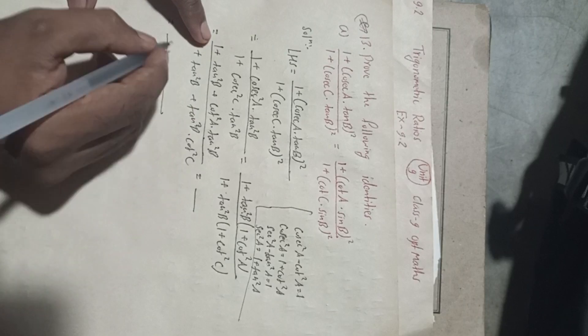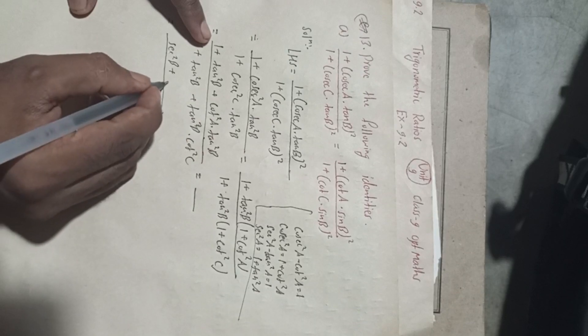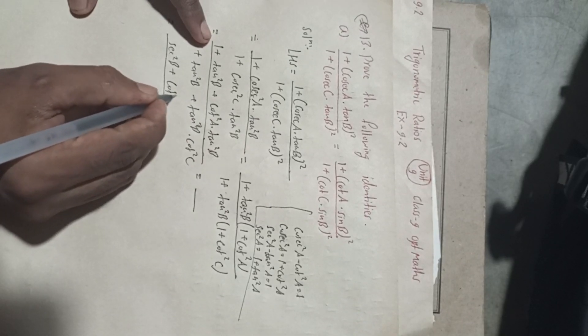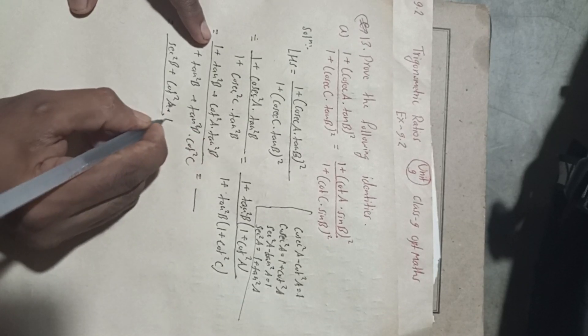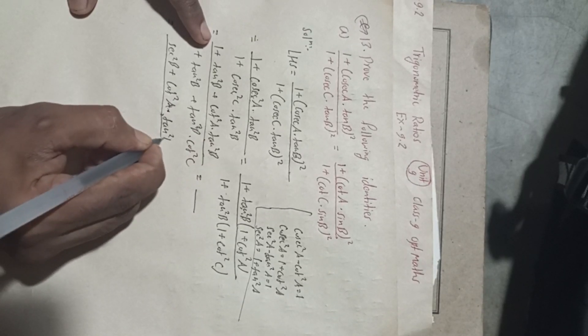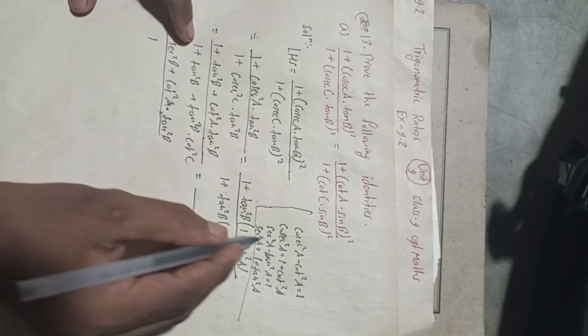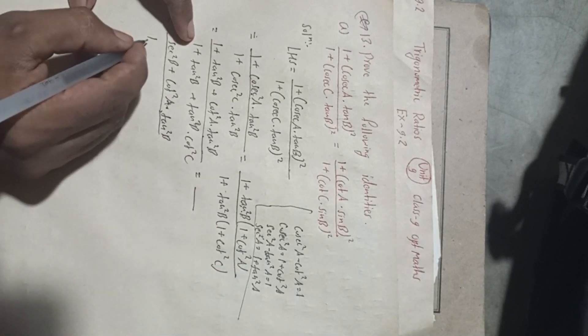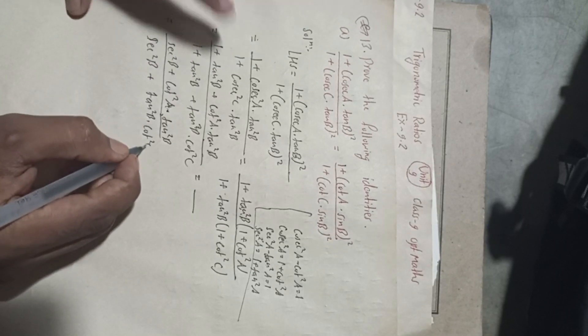So 1 + tan²B becomes sec²B. The numerator becomes sec²B + cot²A · tan²B, and the denominator becomes sec²B + cot²C · tan²B.